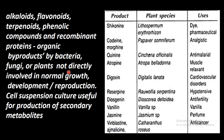They are not directly involved in normal growth, development, or reproduction of bacteria, fungi, or plants — they are by-products. We can create cell suspension of protoplast cells in culture, and these can be used for the production of secondary metabolites in large quantities.